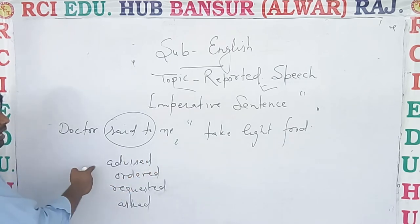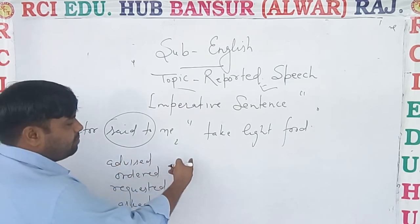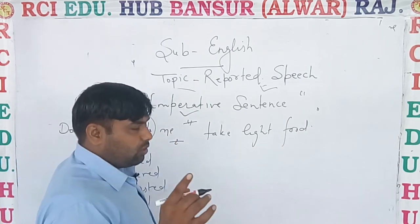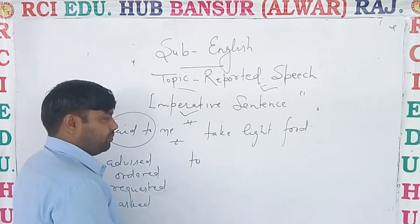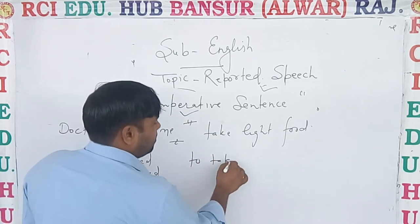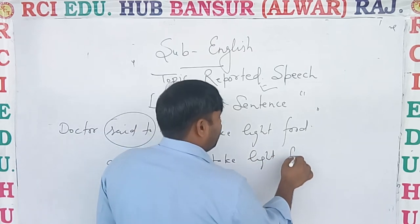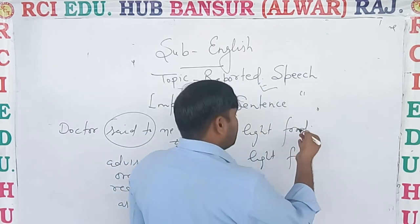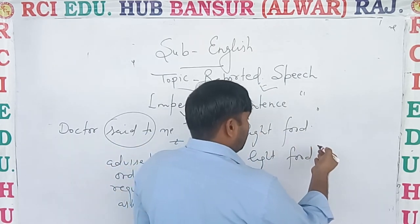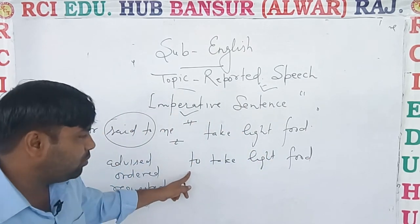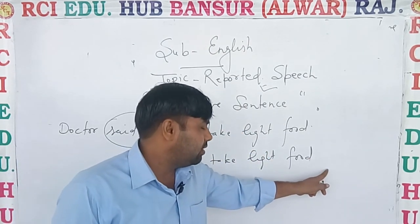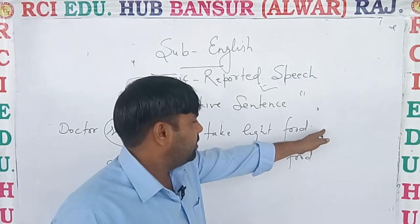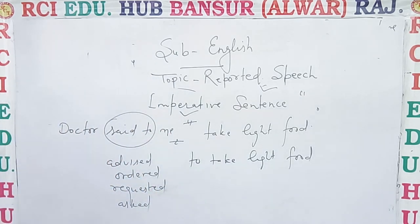Now, 'doctor said' changes to 'advised'. 'Doctor advised' means — to remove the comma, and we will use 'to'. So: 'take light food' becomes 'to take light food', and the same sentence will remain as it is. But if a pronoun is given, then it will be changed according to the subject and object.